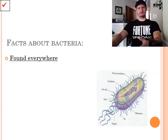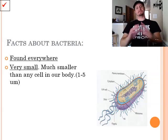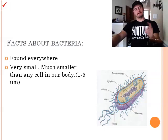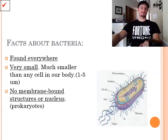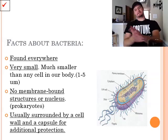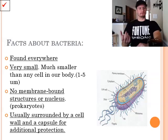Facts about bacteria. Once again, they're found everywhere. Bacteria. It's everywhere. Get used to it. They are very small, much smaller than any other cell inside your body. Now, this is partially due to the fact that they are prokaryotic cells. They lack a nucleus, membrane-bound organelles. So, as such, they can't get very complex. They have no membrane structures or nuclei, making them prokaryotes, like I just said. And they're usually surrounded by a cell wall and a capsule for additional protection. Since they're so simple, they need all the protection they can get. Think of it like layering up for going outside in the winter.